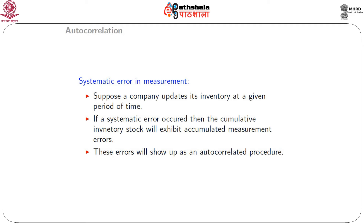Another cause of autocorrelation is systematic error in measurement. Suppose a company updates its inventory at a given period of time. If a systematic error occurred, then the cumulative inventory stock will exhibit the cumulated measurement error, and these errors will show up as an autocorrelated error in the linear model. Thus, when we have any one of these three problems — model misspecification, omitted variables, or measurement error — there is a chance of autocorrelation being present.